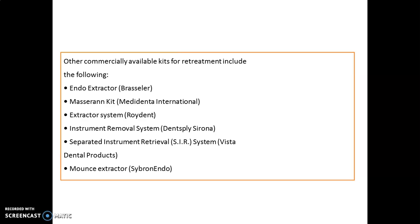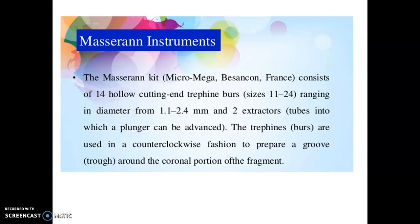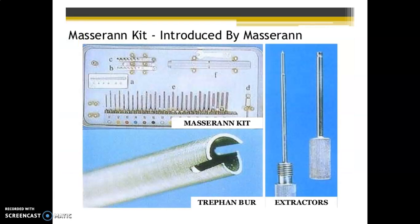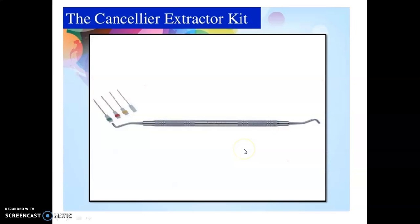There are several retreatment kits to remember: the Endo Extractor, Masserann kit, Extractor System, IRS (Instrument Removal System), SIR (Separated Instrument Retrieval System), and Mounds Extractor. The Masserann kit consists of 14 hollow trephine burs, sizes 11 to 24, with diameters ranging from 1.1 to 2.4 mm, plus two extractors. The trephine burs are used in a counterclockwise fashion to prepare a groove around the coronal portion of the fragment. You can see the Masserann kit with its trephine bur and extractors. Another system is the Cancellator Extractor Kit.